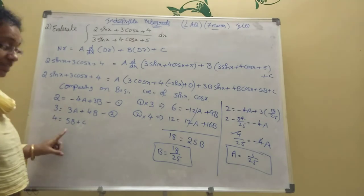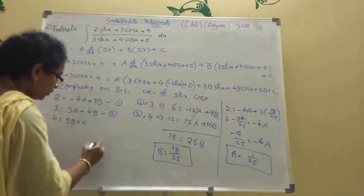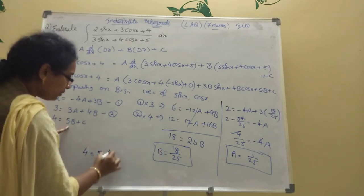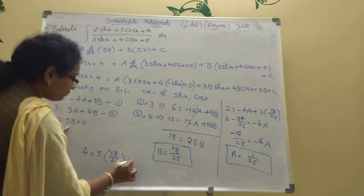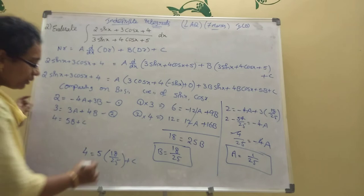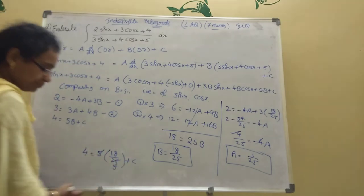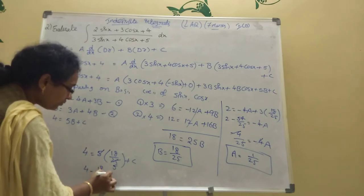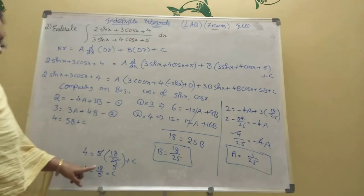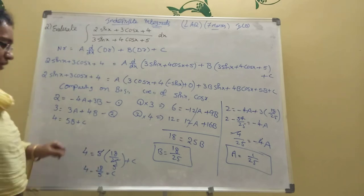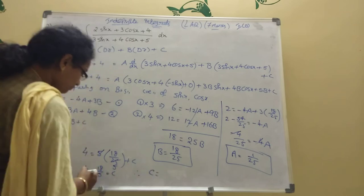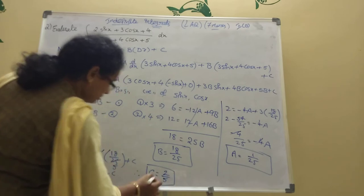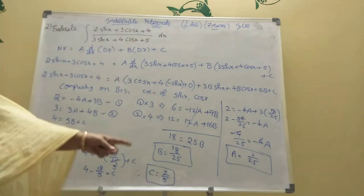Now find C using equation three: 4 equals 5B plus C. Substituting B equals 18/25: 4 equals 5 into (18/25) plus C. The 5 and 25 give 18/5. So C equals 4 minus 18/5. That is 20/5 minus 18/5 equals 2/5. So C equals 2/5. We now have A equals 1/25, B equals 18/25, C equals 2/5.